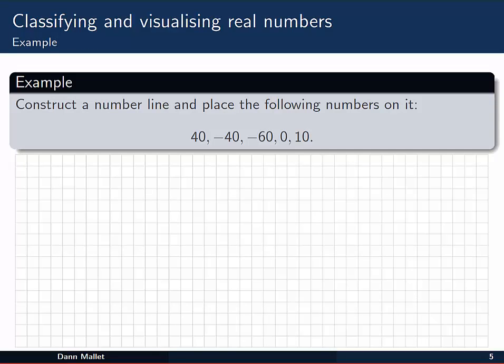Let's just quickly have an example though. Construct a number line and place the following numbers on it. So we've got there 40, minus 40, minus 60, zero and 10. So we've got some negatives, some positives, the zero point. I'm just going to put down a nice straight line there. Remember we put some arrows in because it goes on forever in either direction. I'm going to place in a zero point, and that's my first number done.